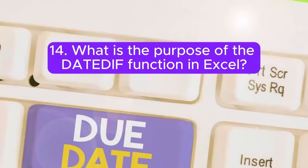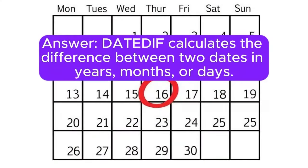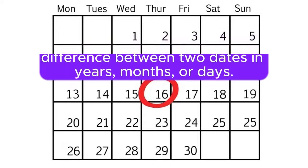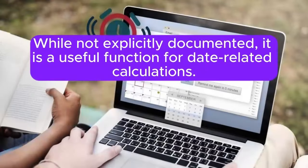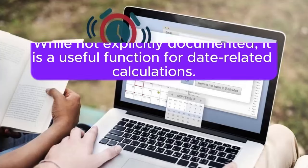Question 14: What is the purpose of the DATEDIF function in Excel? DATEDIF calculates the difference between two dates in years, months, or days. While not explicitly documented, it is a useful function for date-related calculations.